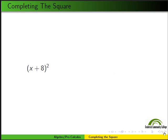Let's look at another one. Here's (x + 8)². We expand to get x² + 16x + 64. Rewriting 64 as 8² - let's look at it here.